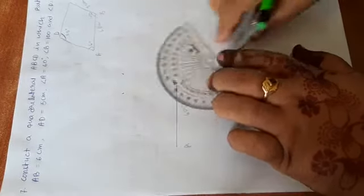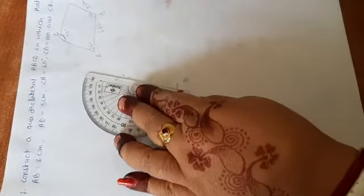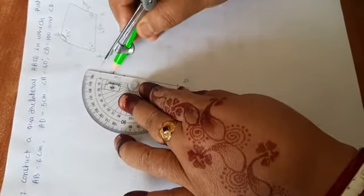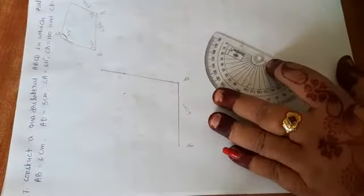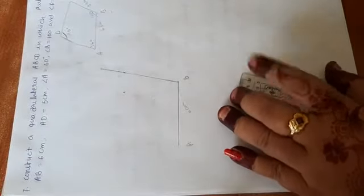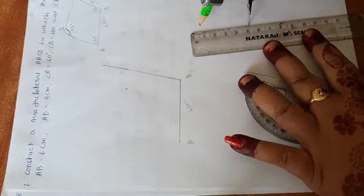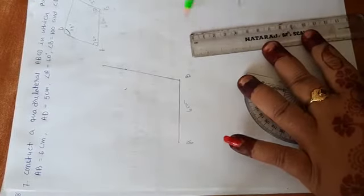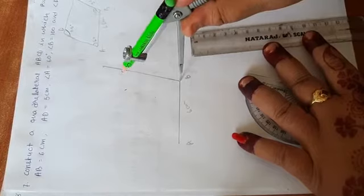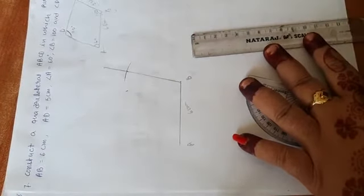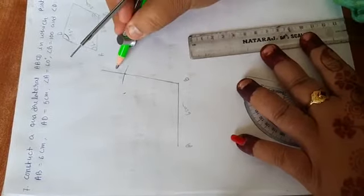Now we join these points. Now from B we draw 5 cm length. From B we cut arc whose measurement is 5 cm.